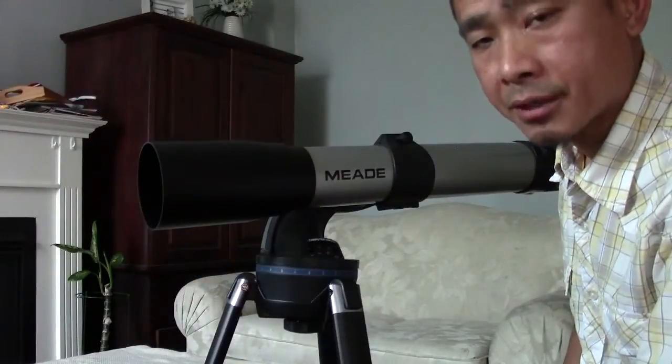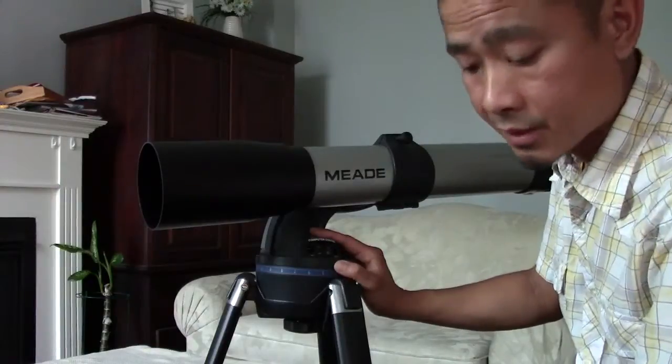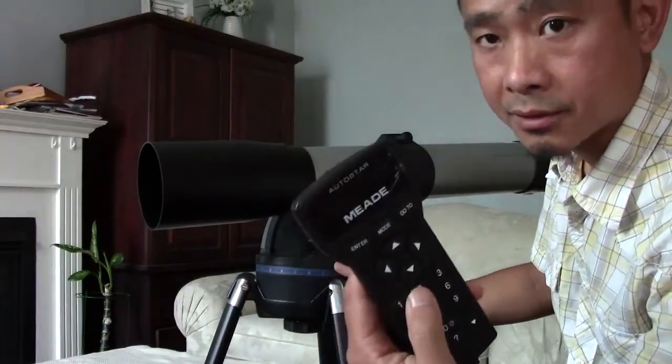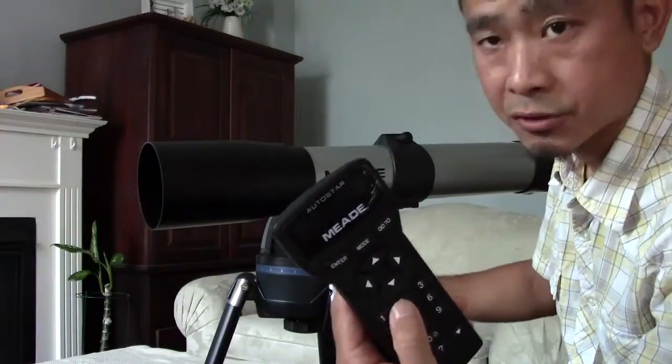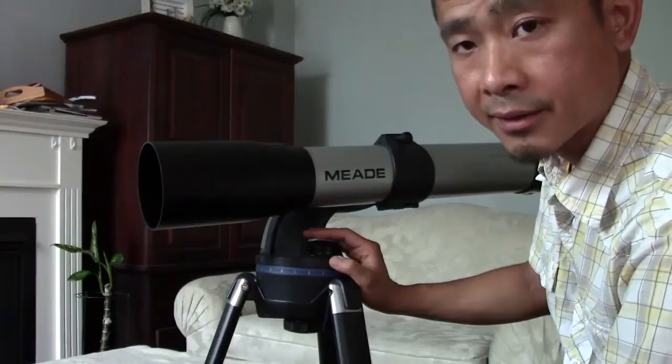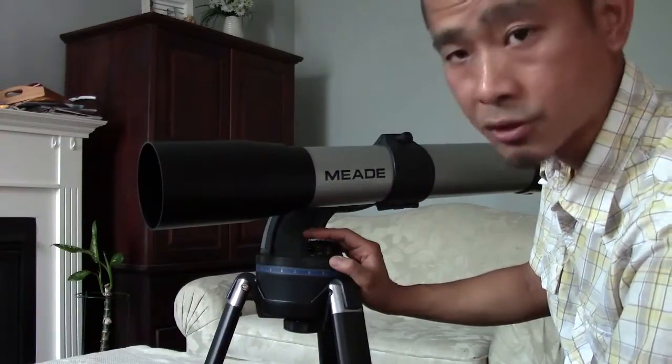One of my favorite features about this telescope is its go-to capability. It has a computer control system that allows me to select the object of my choice from this keypad and it's going to slew towards that object. But before I can do that in each session I would have to set it up first, and I'm just going to show you how to do that.